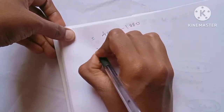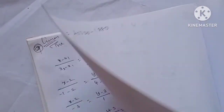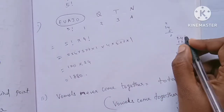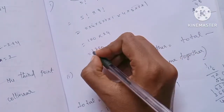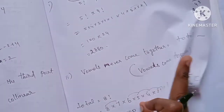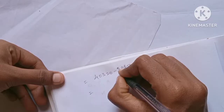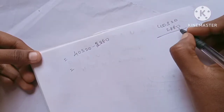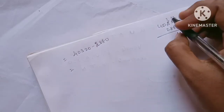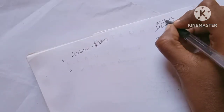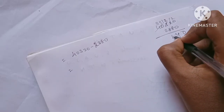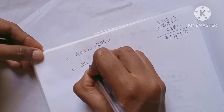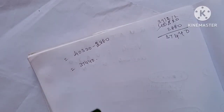Now we subtract: total minus vowels together = 40320 minus 2880. That gives us 37440. So 37440 different strings have the vowels never coming together. Thank you.